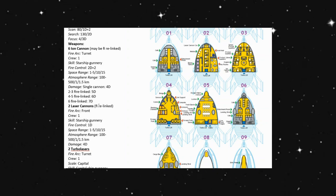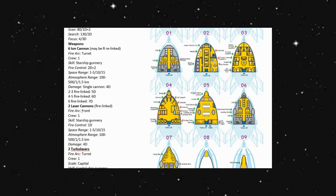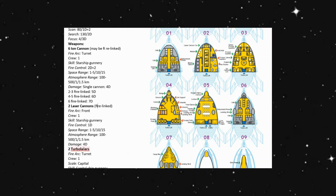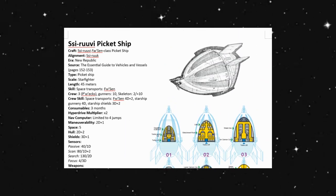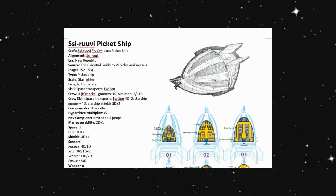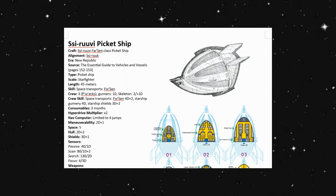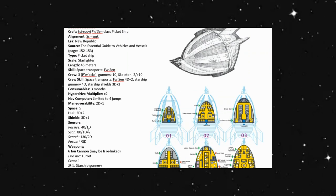Then we have two laser cannons and these are fire linked. It is front facing, has a fire control of 1D and does 4D in damage. So looking at this, I'm going to guess it's this cannon right above what looks like to be our cockpit here.